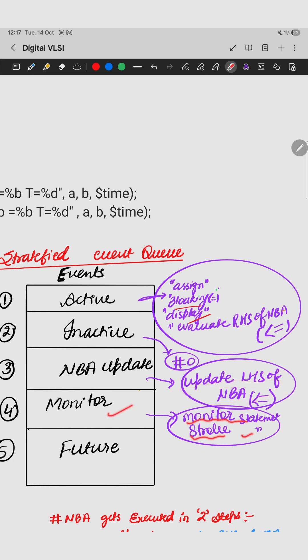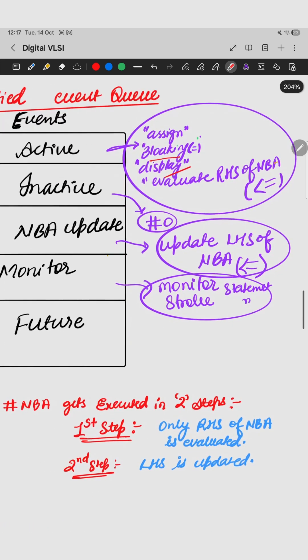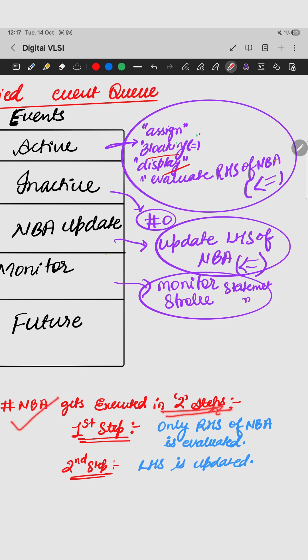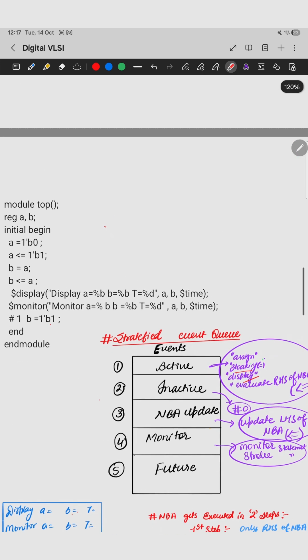Now here the monitor—monitor statement and strobe statement is executed. The main point I have written is non-blocking assignment is always executed in two steps. In first step only the RHS of the NBA is evaluated, and in the second step LHS is updated. This will be more clear when we solve this question.